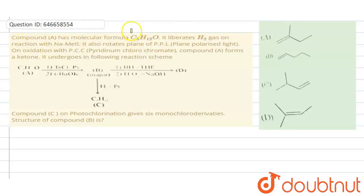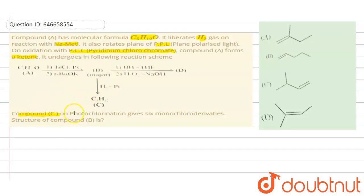Hello everyone. Here our question is: Compound A has molecular formula C5H12O. It liberates H2 gas on reaction with sodium metal. It also rotates plane polarized light, that is, it is optically active. On oxidation with pyridinium chlorochromate, compound A forms a ketone. It undergoes the following scheme of reaction, and we need to find compound C.